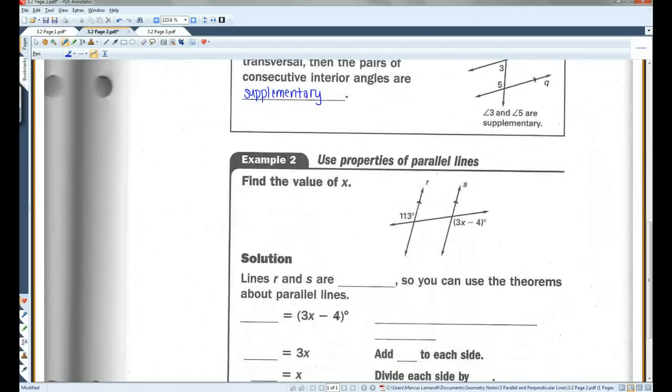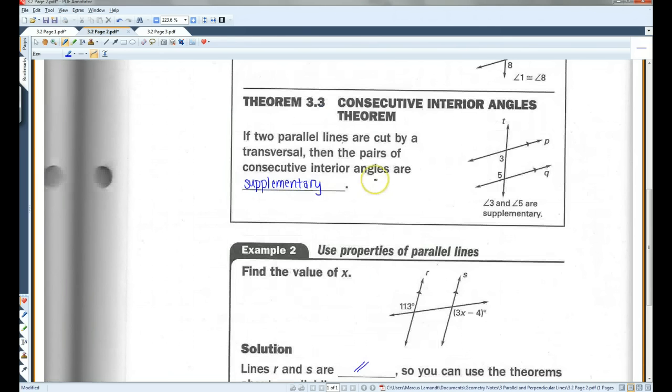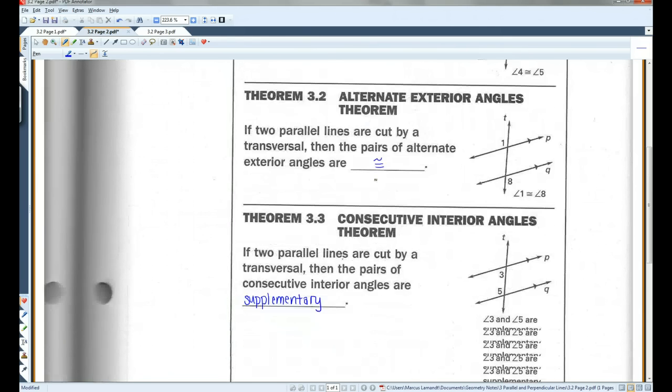All right, so for example, find the value of x. We have this angle, which is 113 degrees, and we have this angle, which is 3x minus 4. Now, lines r and s are parallel. So, you can use any of these theorems that we just learned.